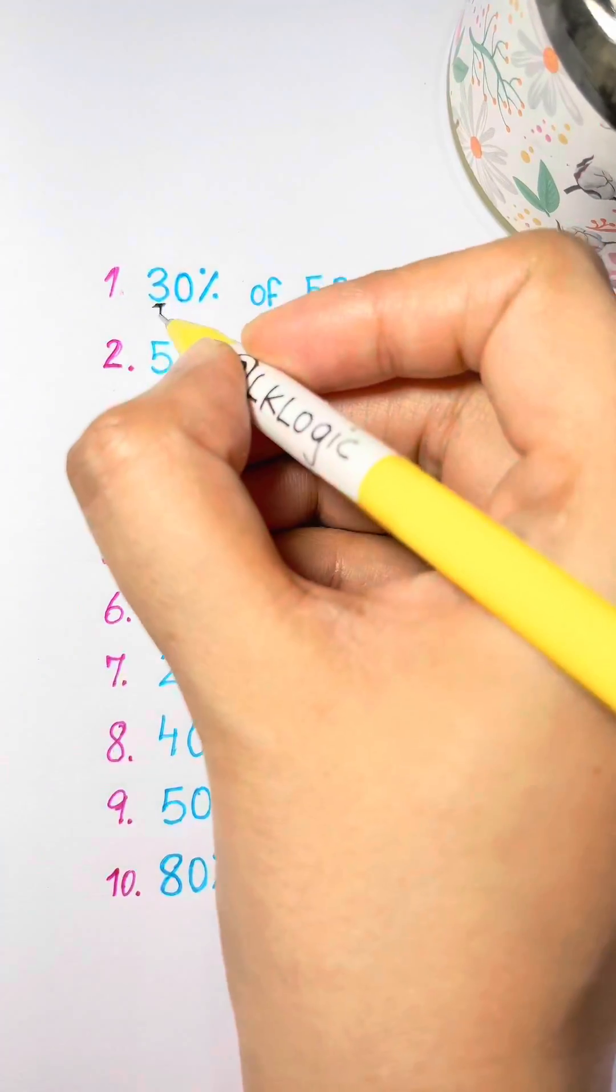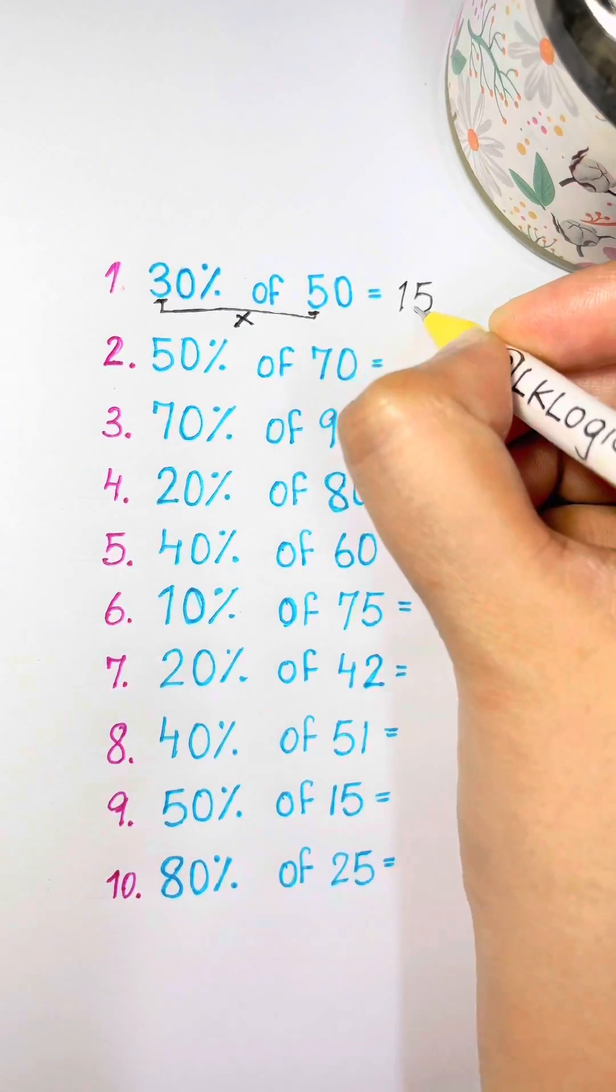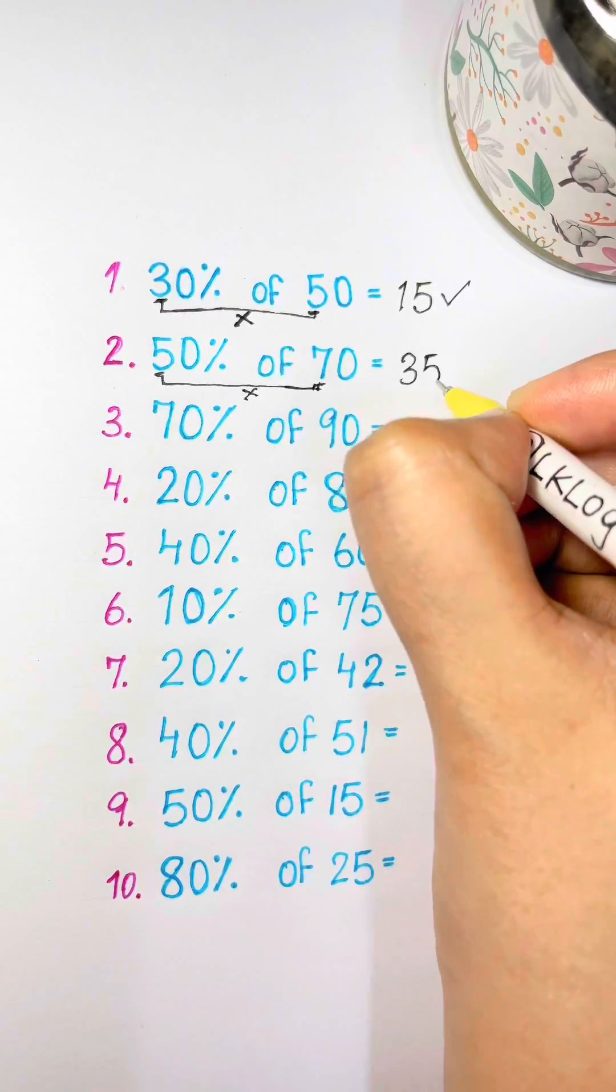What's 30% of 50? Just multiply 3 times 5 equals 15. What's 50% of 70? Just multiply 5 times 7 equals 35.